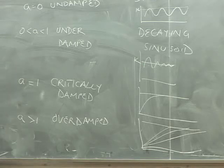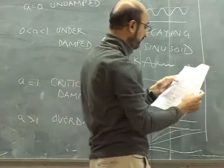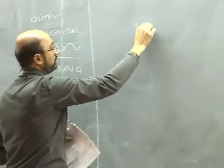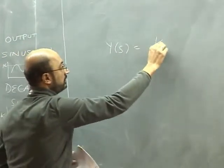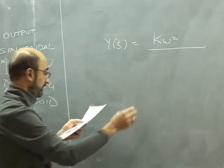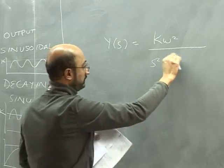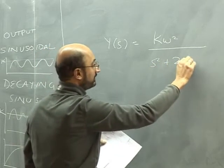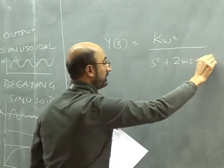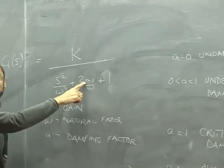Let's go to the case of critical damping. We write Y(s) equals K times omega squared, moving omega squared to the top, giving us s squared plus 2 omega s plus omega squared in the denominator. Setting A equals 1 and multiplying the step input by 1 over s, we can write this in the form of a partial fraction.